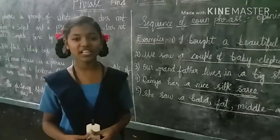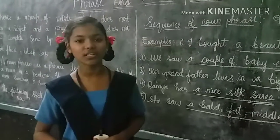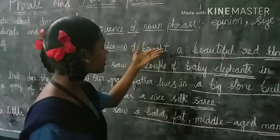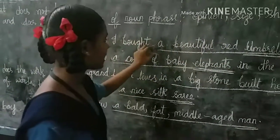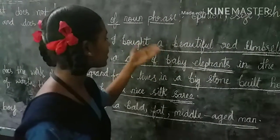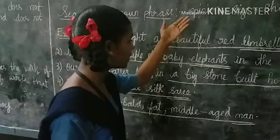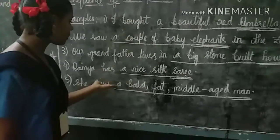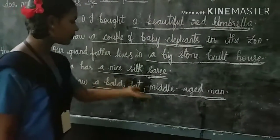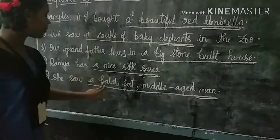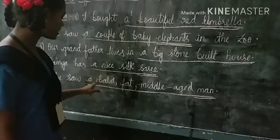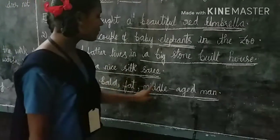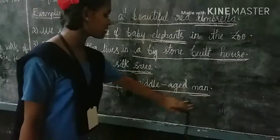If you have two or more adjectives for a single noun, you have to follow this order. I wore a beautiful red umbrella — A is an article which comes under adjective, beautiful is opinion, red is color, umbrella is noun. She saw a bald, fat, middle-aged man — A is an article under adjective, bald is an opinion, fat is a shape, middle-aged is an age, man is a noun.